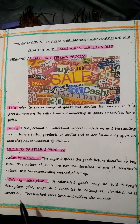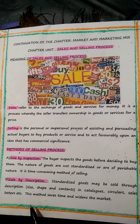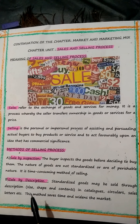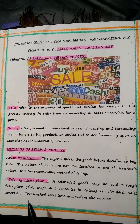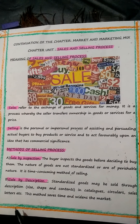The second method is sale by description. This is meant for standardized, branded goods which are non-perishable in nature. Standardized goods may be sold through description — describing size, shape, and contents of the products in catalogs, circulars, sales letters, etc. This method saves time and widens the market. Sale made without the buyer seeing the goods, but having a description of them from the seller — the description will do. In this method, there is an implied condition that goods should correspond and conform to the description given in the catalogs.